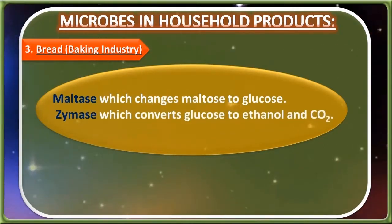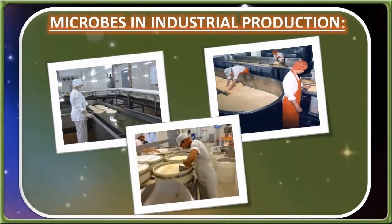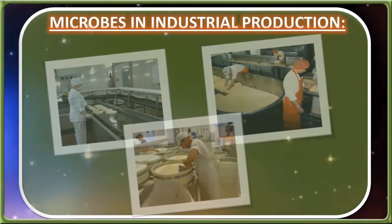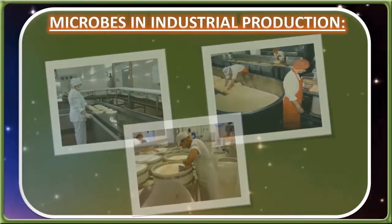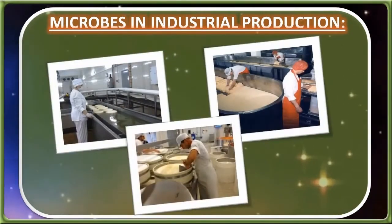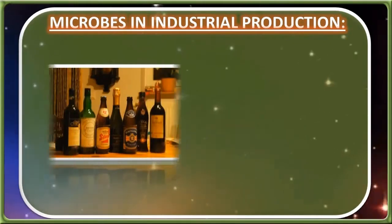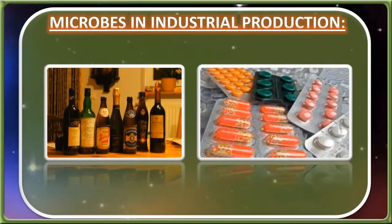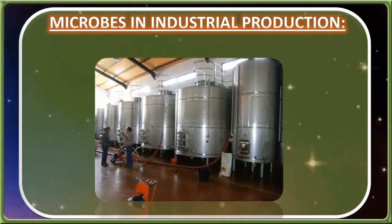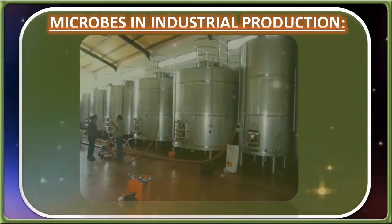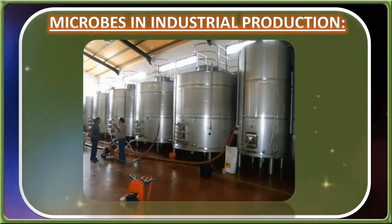The Zymase converts glucose to ethanol and CO2. Microbes in industrial production: Even in industry, microbes are used to synthesize a number of products valuable to human beings. Beverages and antibiotics are some examples. Production on an industrial scale requires growing microbes in very large vessels called fermenters.